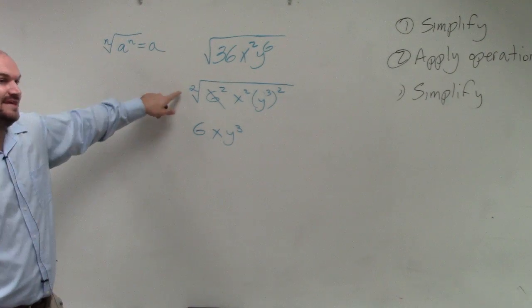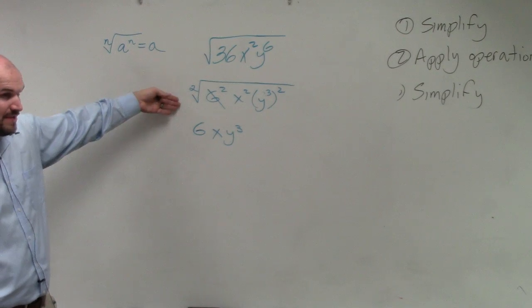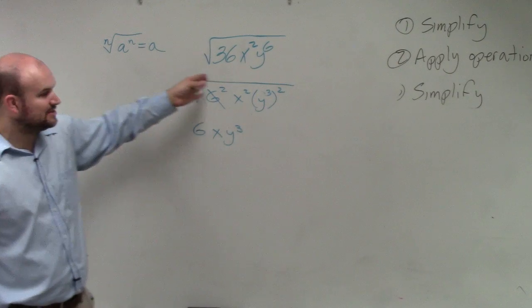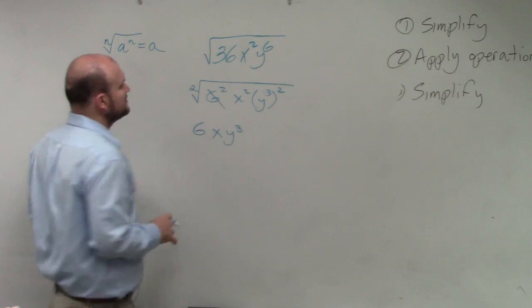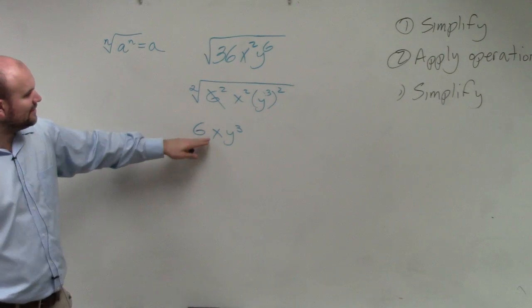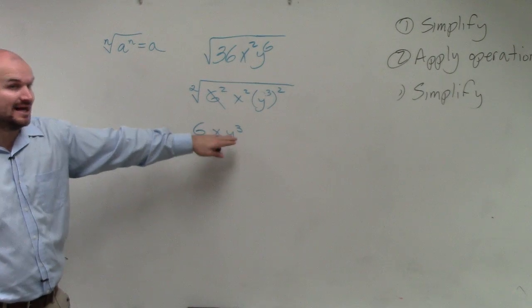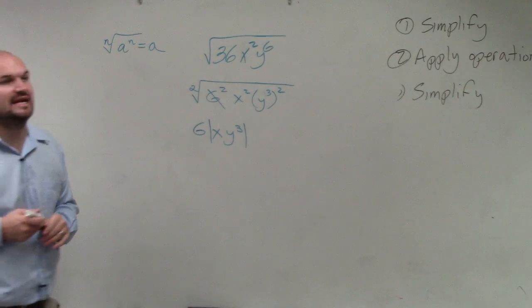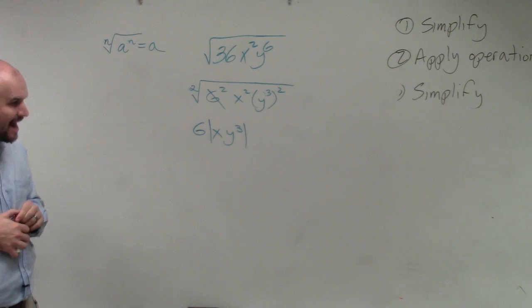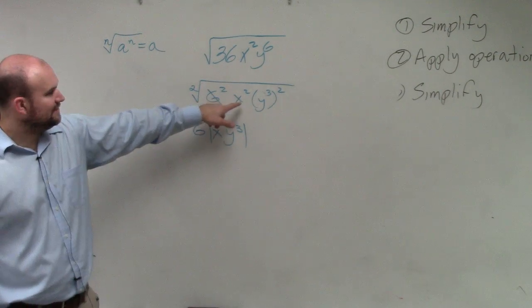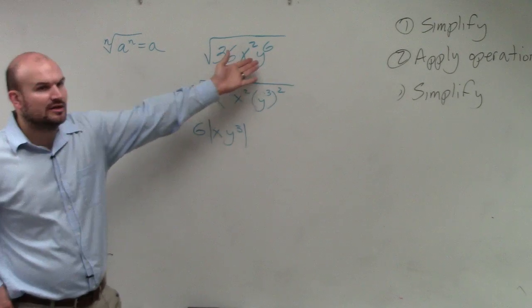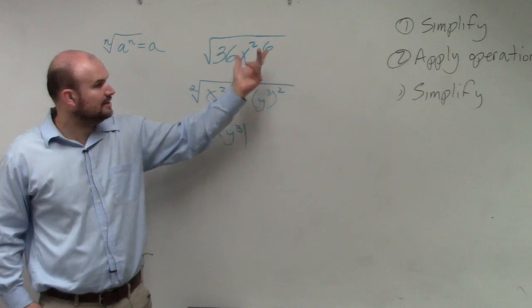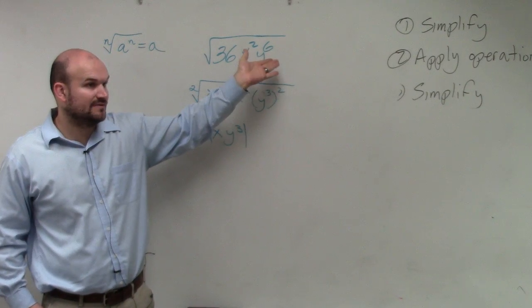now since we had an even power, and once we simplified this, these are now to an odd power. We just want to make sure that we're going to apply our absolute values, stating that they are going to be positive values. Because in reality, guys, if you had like y to the sixth power, you could use a negative number or a positive number. It doesn't really matter if it was positive or if it was negative. Correct?